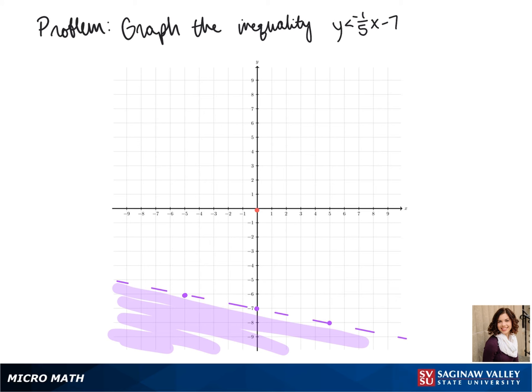To test this, we can pick a point. If we pick a point that's not shaded, we have to make sure that this point does not make our inequality true.